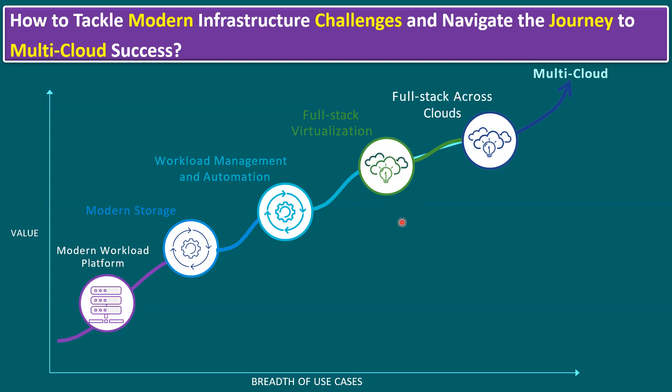Once we have a VCF private cloud infrastructure, the next stage is full-stack across clouds. Our infrastructure already has enterprise networking, storage, virtualization VMs, and container workloads. Containers are portable applications that can be moved to any other public cloud as well. VCF has the capability — using site-to-site VPN connections — to integrate with public cloud environments including AWS, Azure, Google Cloud, IBM, and others. This means our full-stack across clouds has options to integrate with other cloud environments.